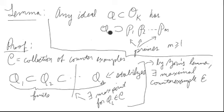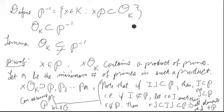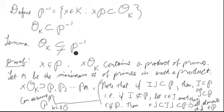So we've shown that even the maximal counterexample still wasn't actually a counterexample. It's a contradiction, so all ideals actually contain products of primes. Now let's define what we'll call the fractional inverse of the prime P: it's all elements in the field K such that when we multiply them by P, we land in OK. We propose that this P⁻¹ non-trivially contains OK — i.e., it's strictly bigger than OK.